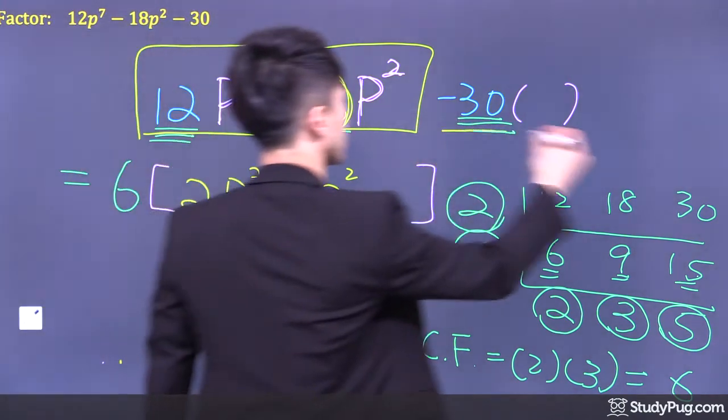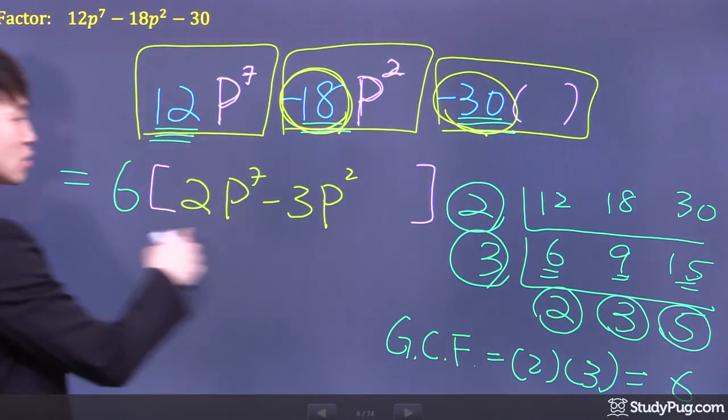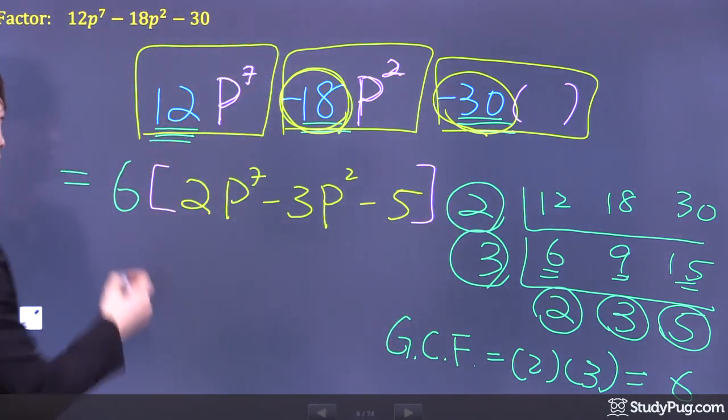Now for the third term, negative 30 divided by 6, we have negative 5. And there we go. We're done.